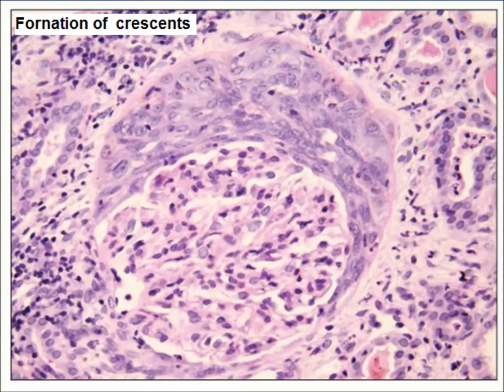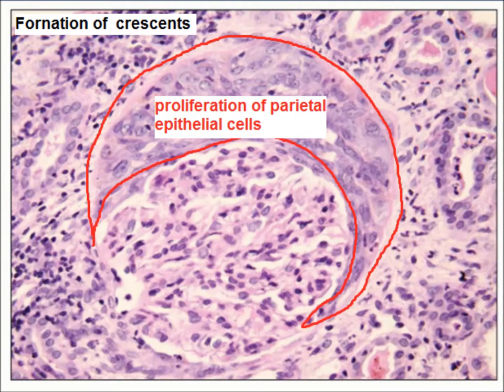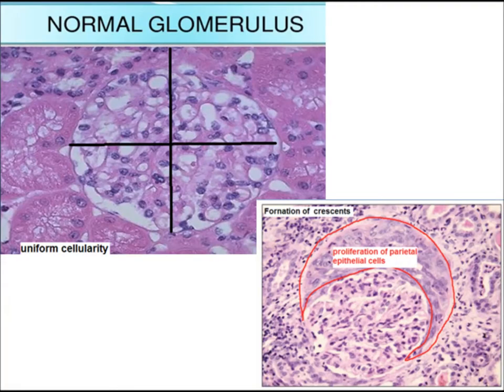You can compare the normal glomerulus with the hypercellular glomerulus. In this photomicrograph, you can appreciate a crescent, which is due to the proliferation of parietal epithelial cells. A crescent has a half-moon shape, and it results from proliferation of parietal epithelial cells. This is also a hypercellular glomerulus. You can compare in this slide with the normal glomerulus.